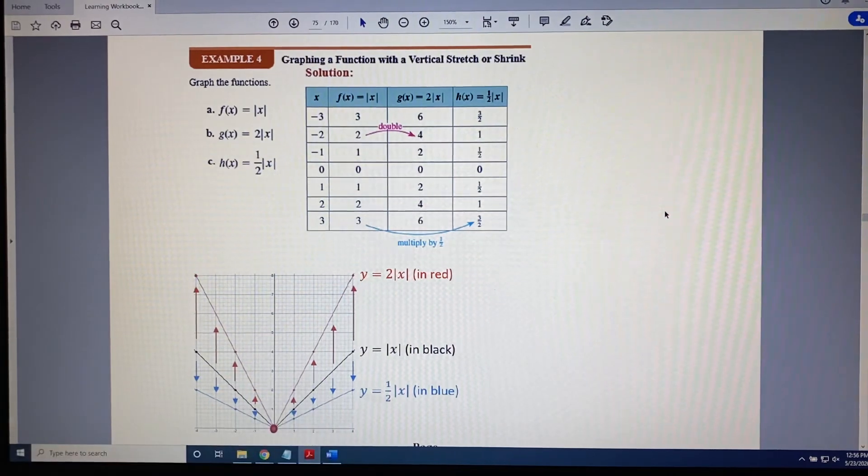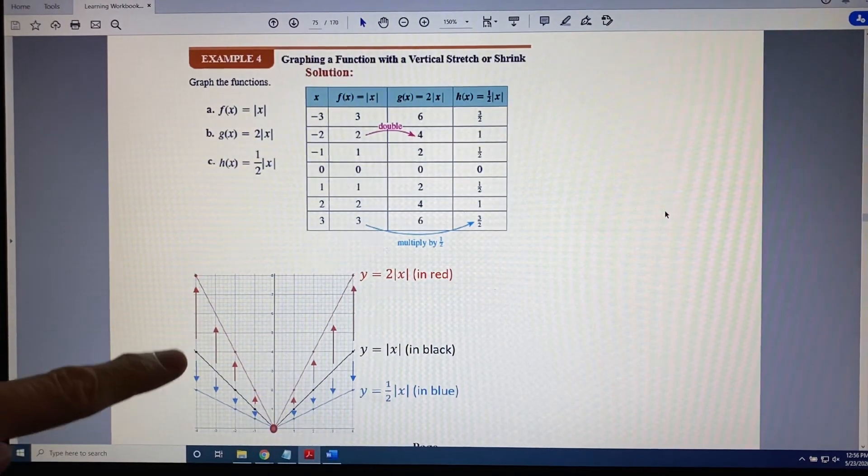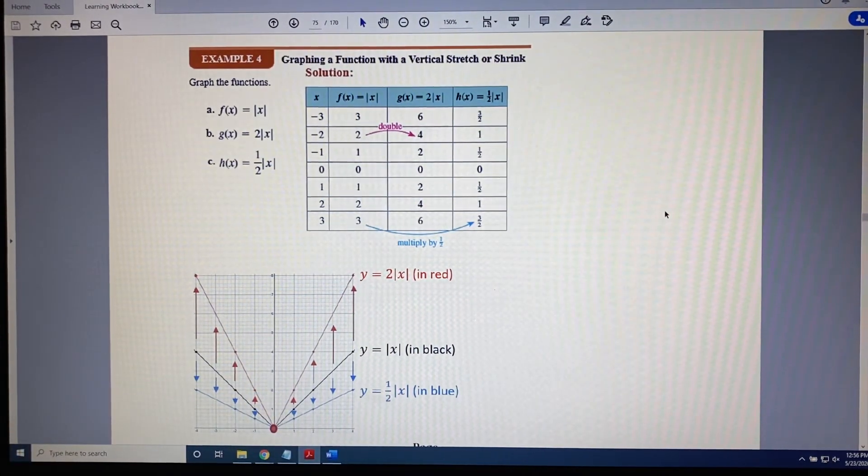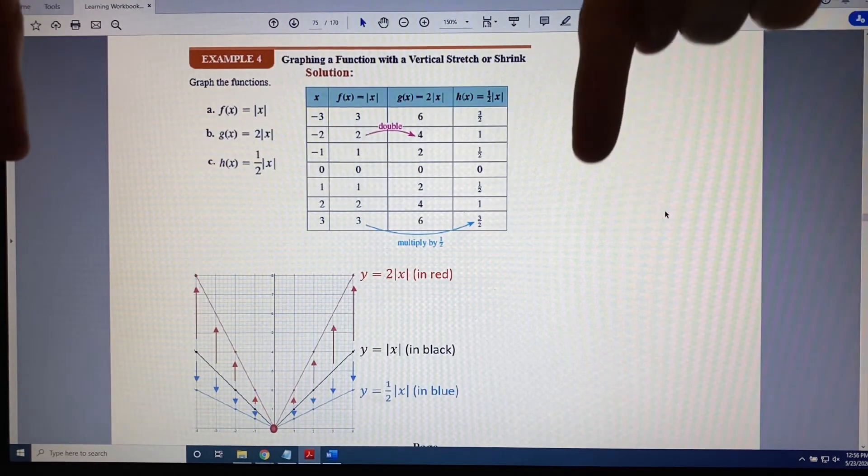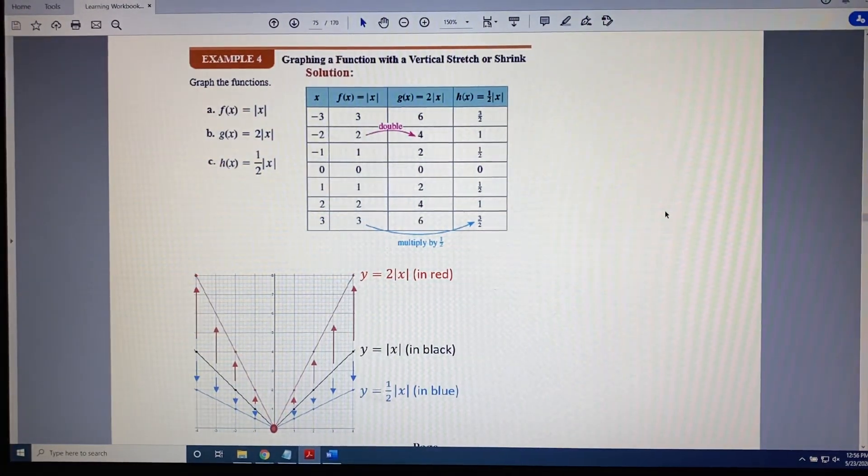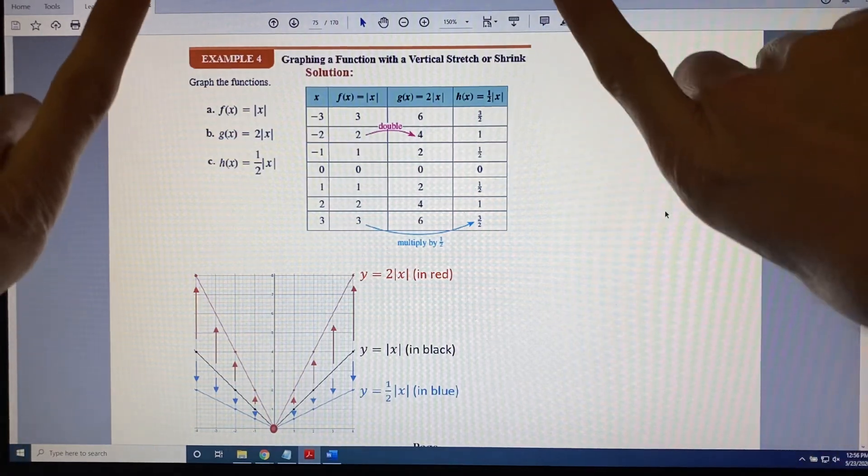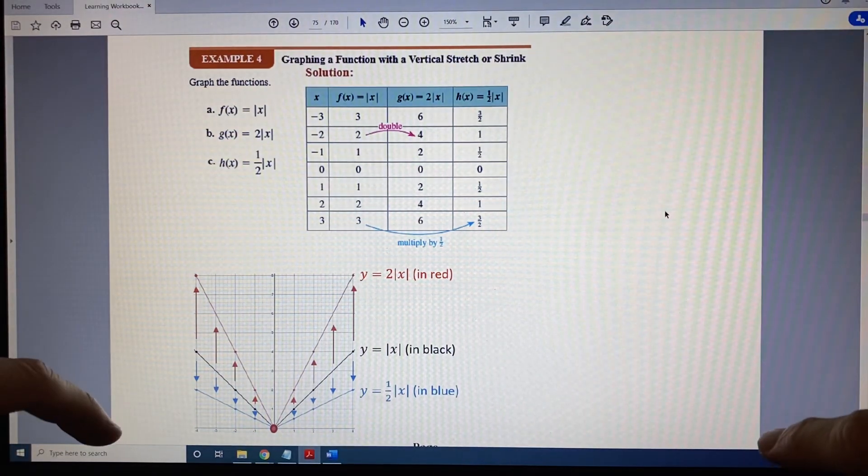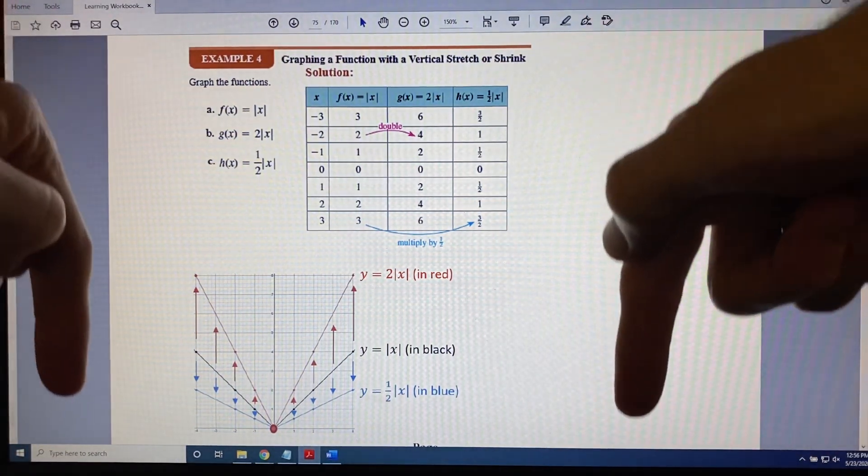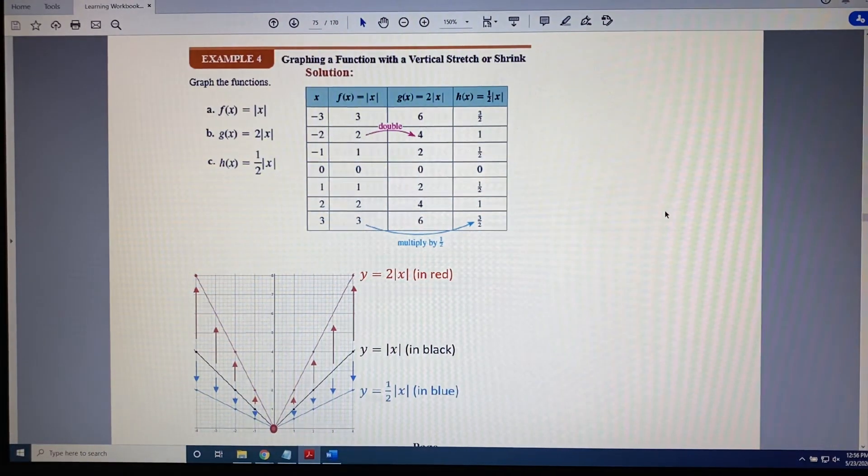So going from the black graph to the blue graph, all of the points moved down towards the x-axis. And that is an important distinction that you want to pay careful attention to. With a stretch, the points are moving away from the x-axis. And with a shrink, the points are moving down towards the x-axis.